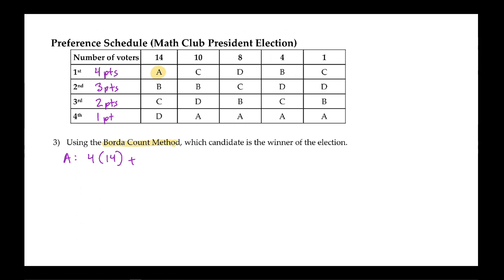In the second pile with 10 votes, Anna was ranked fourth place, so she gets one point times 10. In the next pile of eight ballots, she was ranked fourth place again — one times eight. Then one times four for the next pile, and one times one for the last pile.